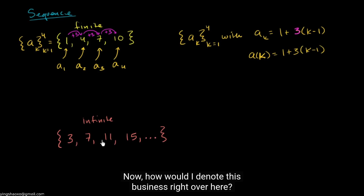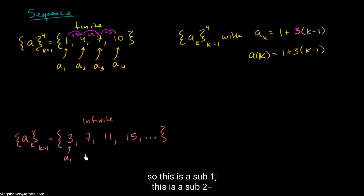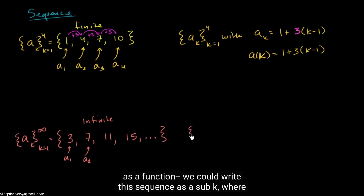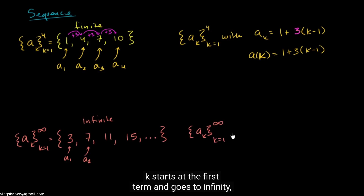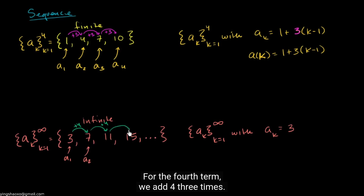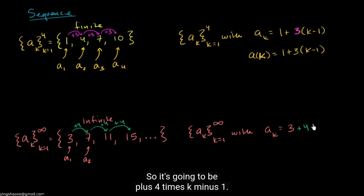How would I denote the infinite sequence? I could say a sub k, going from k equals 1 to infinity. Or if I want to define it explicitly as a function: a sub k, where k starts at 1 and goes to infinity, with a sub k equal to 3 plus 4 times (k minus 1). We're starting at 3 and adding 4 one less time than the term index. So this is another way of defining this infinite sequence.